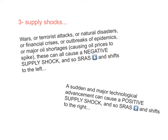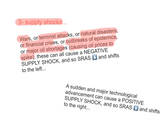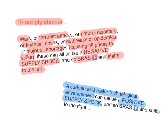The last factor that causes shifts in short run aggregate supply is supply shocks, which can be either positive or negative. Examples of negative supply shocks include wars, terrorist attacks, natural disasters, financial crises, outbreaks of infectious diseases, or major oil shortages due to spiking oil prices. All of these can cause a negative supply shock, causing short run aggregate supply to decrease and the curve to shift to the left. Conversely, a sudden and major technological advancement can cause a positive supply shock, increasing short run aggregate supply and shifting the curve to the right.